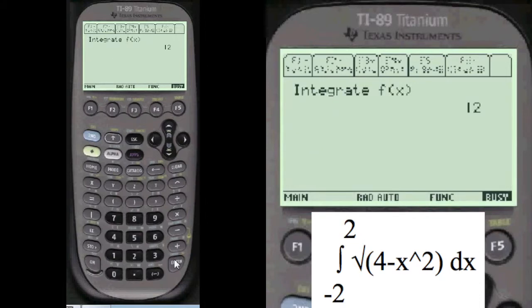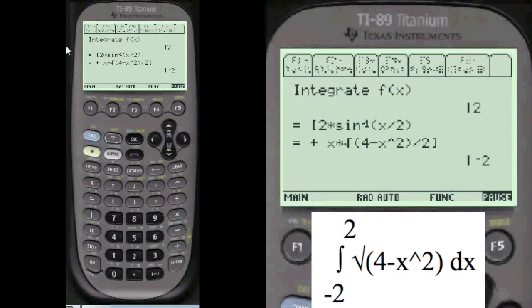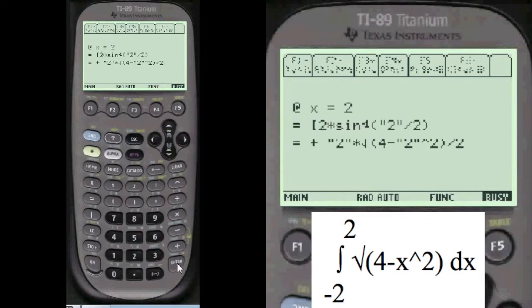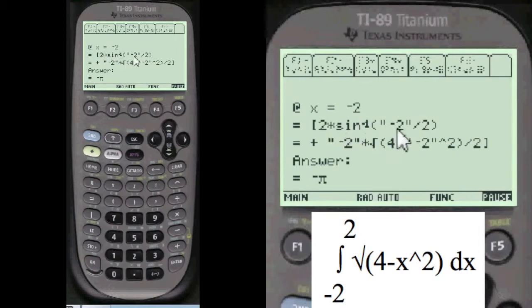Write this all on your paper. At x equals 2, where you substitute 2 in for all the x values. The calculator does quotations, but you're going to have to do parentheses here if you're going to be a classy math person. At x equals minus 2, same thing.